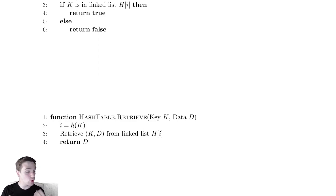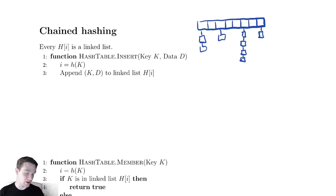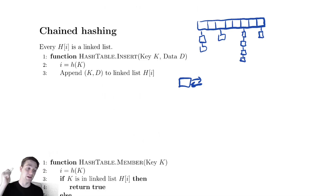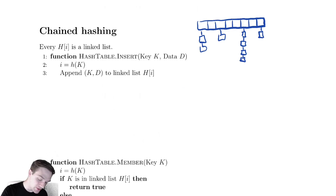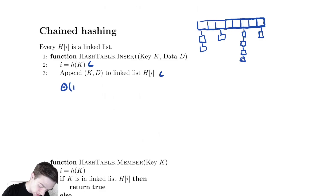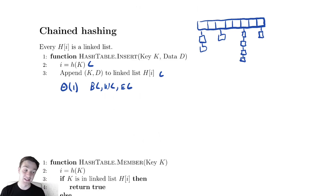Let's analyze how good this implementation is. For the insert method, we always need to perform a hash and then append something to a linked list. Linked lists are very good at adding new elements — you just create a new node and hook up a couple of pointers. So insertion into a linked list is constant, and so is our hash function. Therefore insertion is Θ(1) for both the best case and worst case.